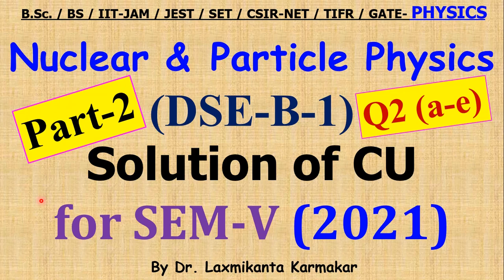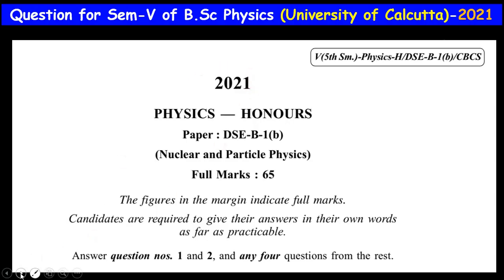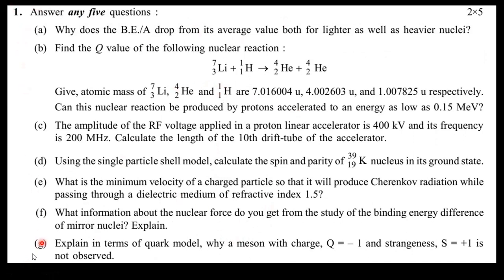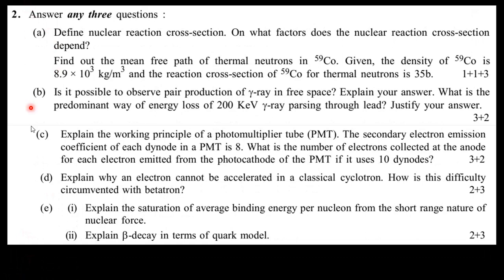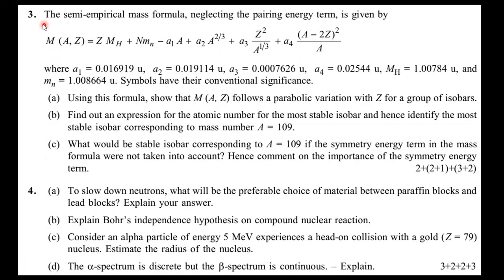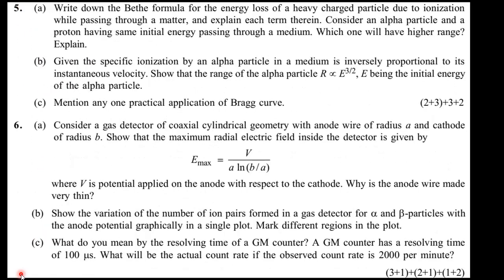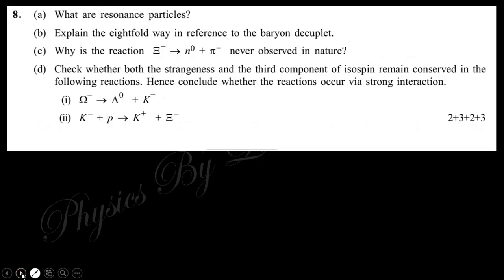Hello, welcome everyone. This is Part 2 of the solution for Nuclear and Particle Physics, DHC paper of Semester 5 under the University of Calcutta — the 2021 question paper. In Part 1 we discussed Question 1, and in this part we want to discuss Question 2. In upcoming parts we will discuss Questions 3 through 8. Try to solve the questions first, then continue with the video.